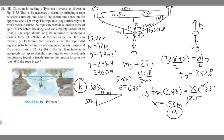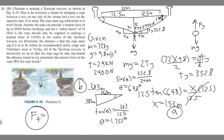Now we do the reverse of what we did before. We know tangent of theta equals opposite over adjacent, so 0.383 over 12.5. Taking the arc tangent gives us theta equals 1.755 degrees. There's a useful formula we can use now to solve for the total tension force.